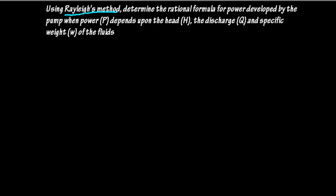Using Rayleigh's method, determine the rational formula for power developed by the pump when power P depends upon the head H, discharge Q, and specific weight W of the fluid. Power is just power of the pump, head is a linear quantity with unit of meter, discharge is volume of fluid flowing per unit time, and specific weight is basically a product of density and gravitational acceleration g.